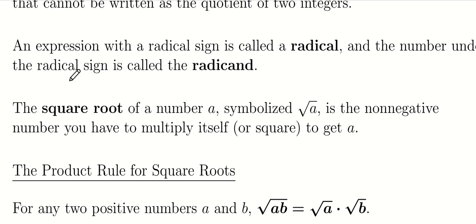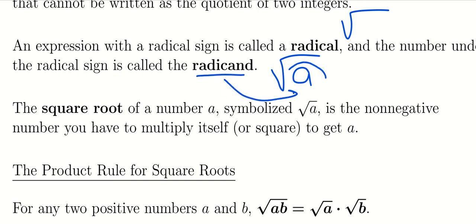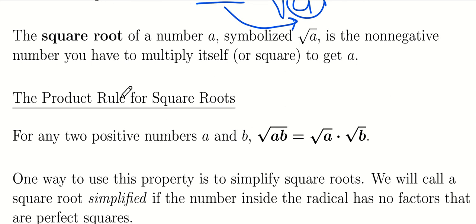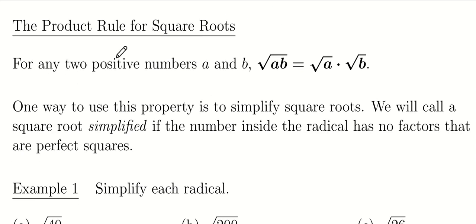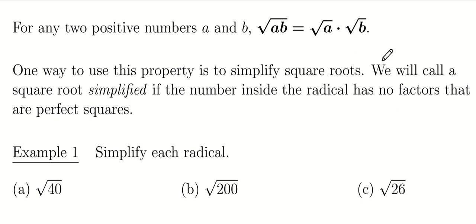This brings us to a discussion of square roots. The symbol is the square root sign, also called a radical. The thing inside the radical sign is called the radicand. There are a couple of rules square roots follow: the square root of a product of two numbers equals the product of their individual square roots, and we can use this to simplify square roots.